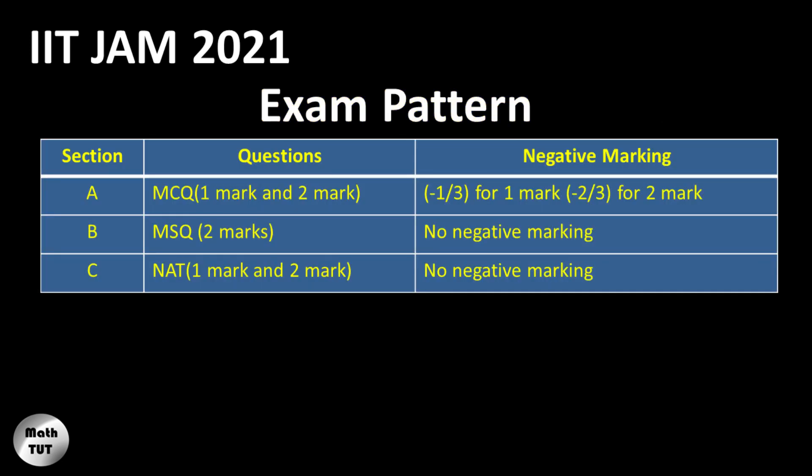In Sections A, B, and C there are three types of questions. Section A contains MCQ questions — multiple choice questions with only one correct answer — of one mark and two marks each. Section B has MSQ type questions, that is multiple select questions, with each question carrying two marks. Section C has NAT, that is numerical answer type questions, with one mark and two mark questions.